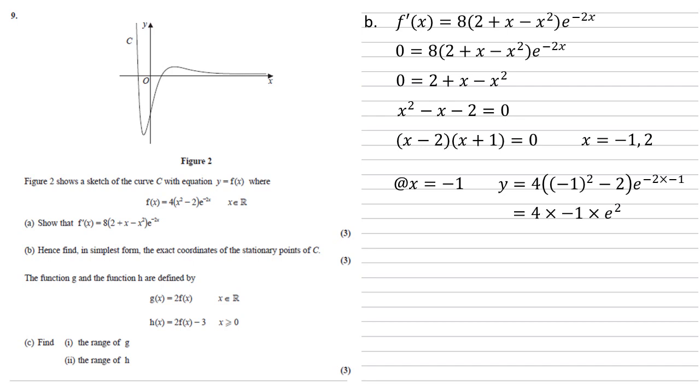Well, that's going to be 4 times minus 1 for the bracket, times e squared, which is minus 4e squared.